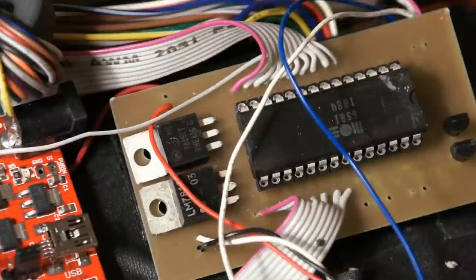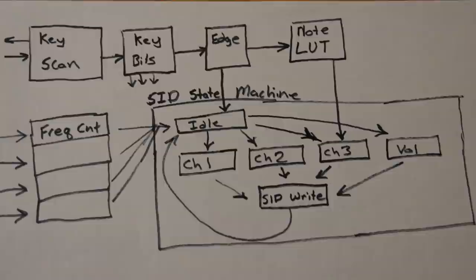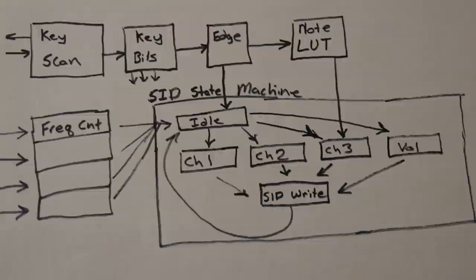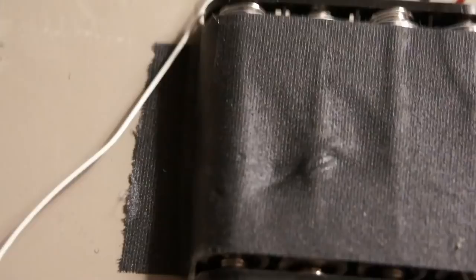And this is the basic structure of the FPGA: keyboard scanning that sets some bits and edge detectors and some lookup tables for the notes, and the frequency counter to try to track the strings, which doesn't work so well.